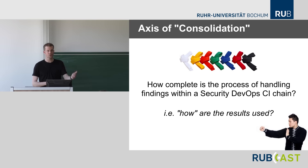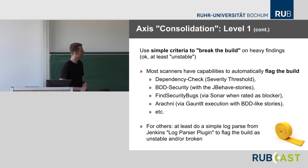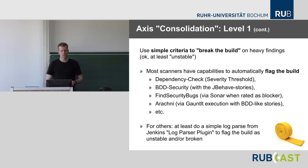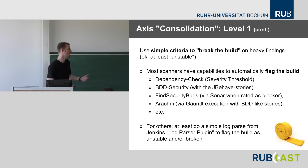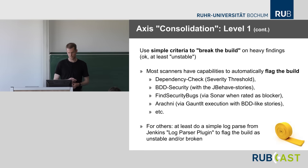Also, use simple criteria for breaking the build on heavy findings. The tools we use — dependency check for dependencies, BDD Security for story-based scans, FindSecurityBugs for static code analysis, and Arachni for spidering — all have ways to integrate with Jenkins so that if a critical vulnerability is found the build automatically turns red and gives feedback to developers. For other scanning tools, at least use simple log parsing with Jenkins' log parser plugin.